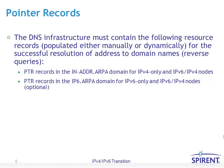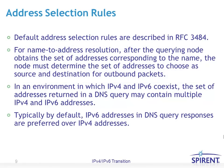For reverse lookups, there is a new ARPA domain that has been added for IPv6 addresses as well. What if you get back multiple addresses — either a combination of IPv4 and IPv6, or multiple IPv6 addresses? RFC 3484 was written to address that. Typically by default, IPv6 addresses in DNS query responses are preferred over IPv4 addresses.